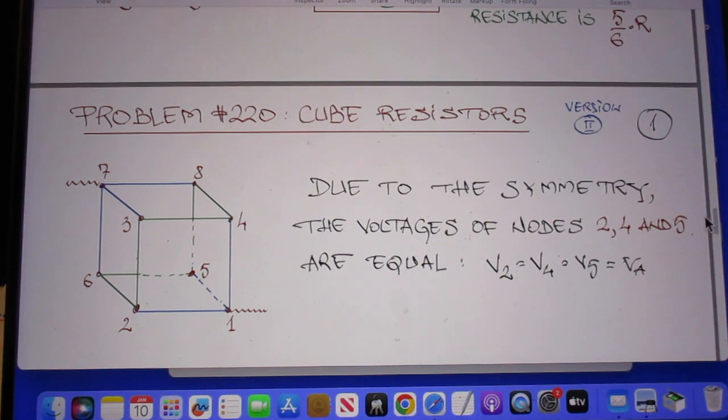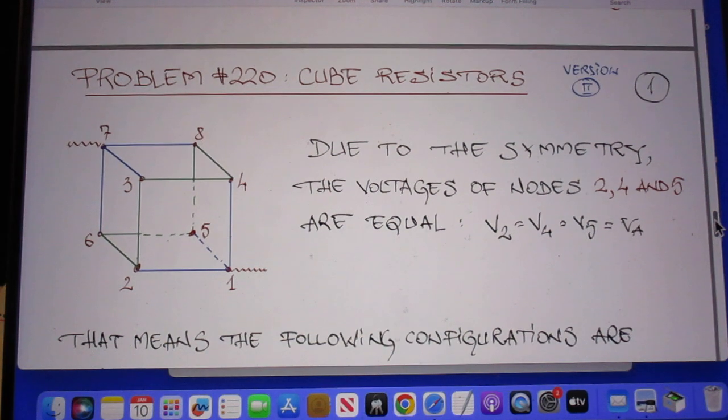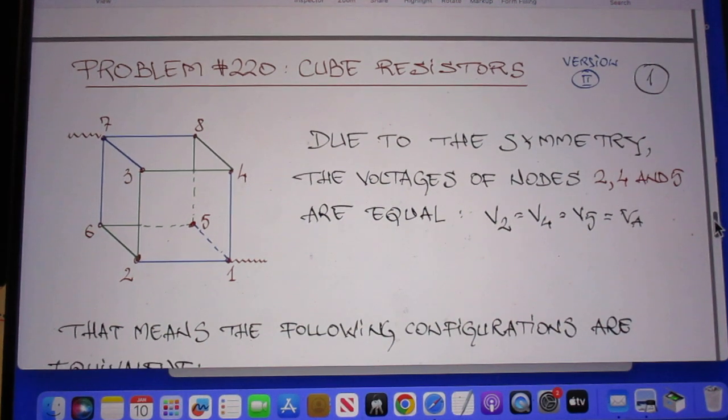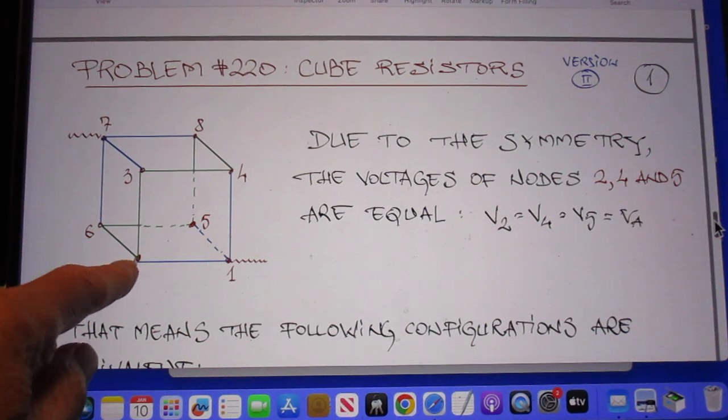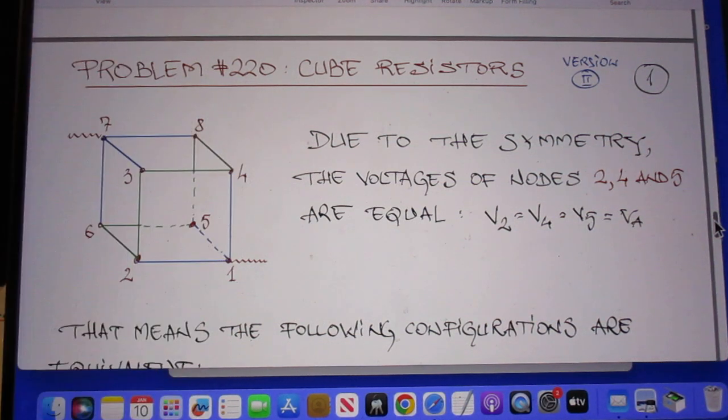Now he chooses a method which is probably the one that you would have used in high school. He doesn't use Faraday's law. So he mentions that the voltage at points two, four, and five are the same. Two, four, and five must have the same voltage and he calls that V of A.